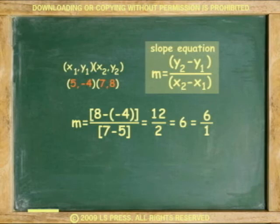Another example. Find the slope of the line passing through points (5, negative 4) and (7, 8). If y2 equals 8 and y1 equals negative 4, then 8 minus negative 4. If x2 equals 7 and x1 equals 5, then 7 minus 5.